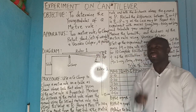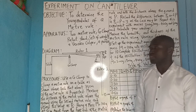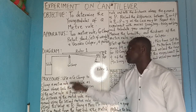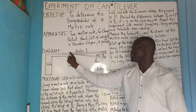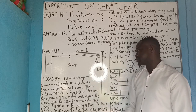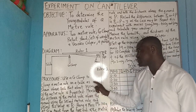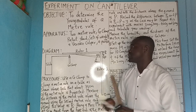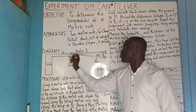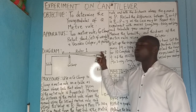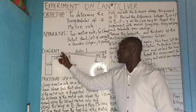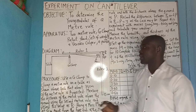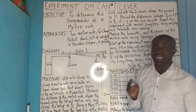That means we need two meter rules to embark on this experiment. Use a G-clamp to clamp one of the meter rules, such that about 25 cm is inside and about 75 cm is projected outward. So from here to here will be 75 cm.